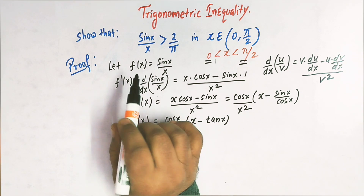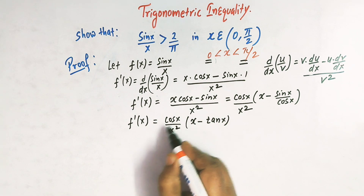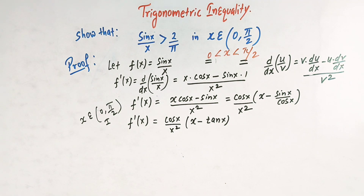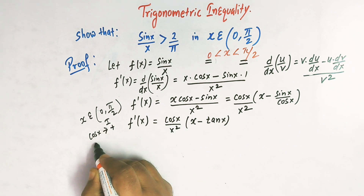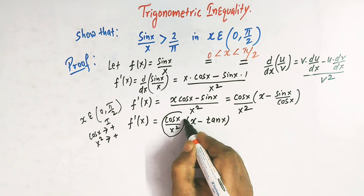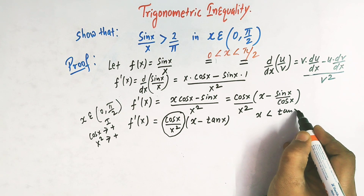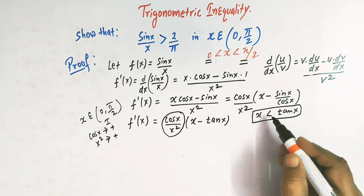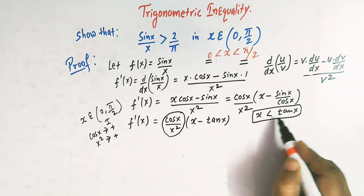Now we will show that this function f of x is a decreasing function in the interval 0 to pi by 2. When x lies in the interval 0 to pi by 2, it means we are in the first quadrant. In the first quadrant, cos x is positive and x square is positive, so this quantity is always positive. But here x is less than tan of x when x belongs to 0 to pi by 2. So we will also prove that x is less than tan of x.